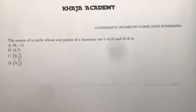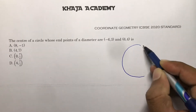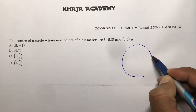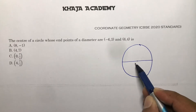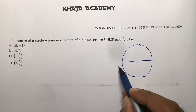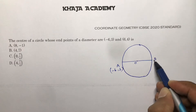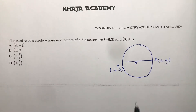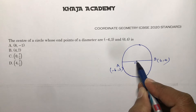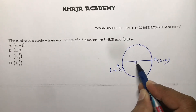We need to find the center of a circle whose endpoints of a diameter are given. The endpoints are A(-6, 3) and B(6, 4).